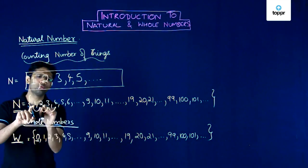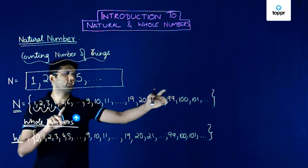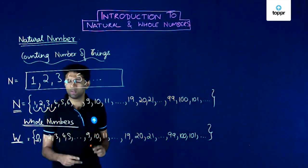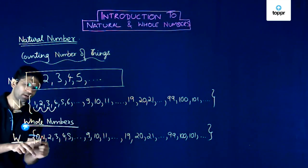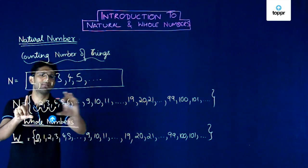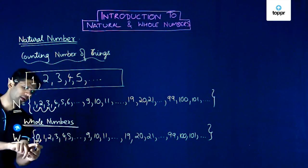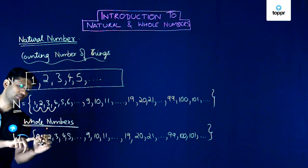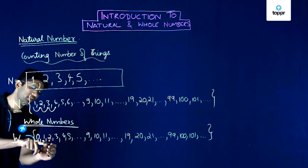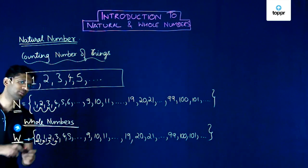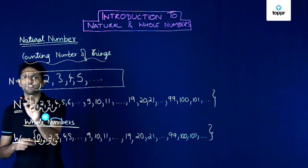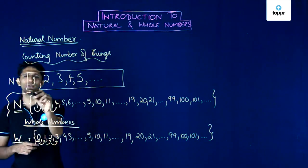Natural numbers start from 1, with each next number obtained by adding 1 to the previous: 1 followed by 2, 2 by 3, 3 by 4, and so on — this list goes on without ever stopping. The whole number list starts with 0 but follows the same rule: 1 = 0+1, 2 = 1+1, 3 = 2+1 and so on. So now we have learned what a natural number is and what a whole number is, and we have seen both lists.